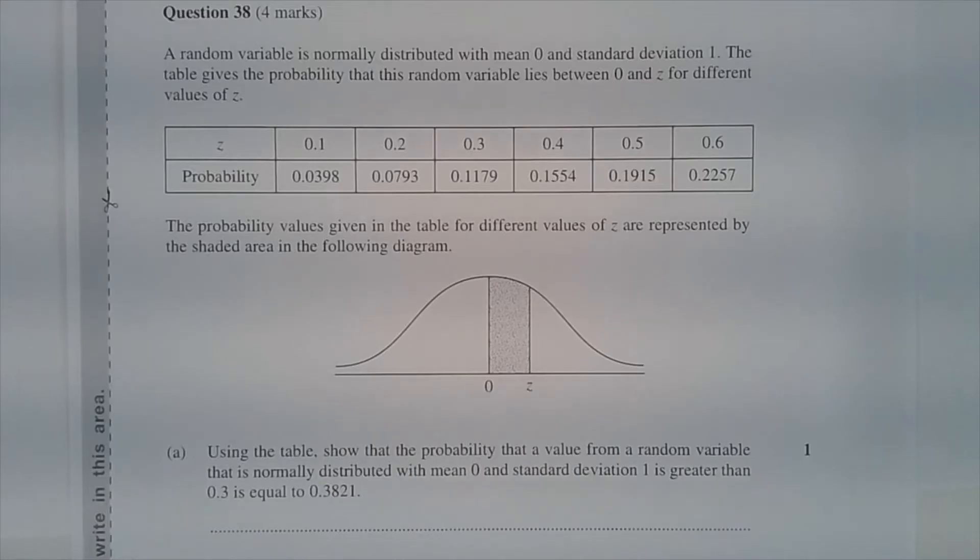Question 38. A random variable is normally distributed with mean 0 and standard deviation 1. The table gives the probability that this random variable lies between 0 and z for different values of z. The probability values given in the table are represented by the shaded area in the following diagram.